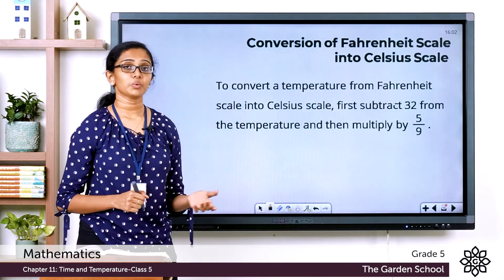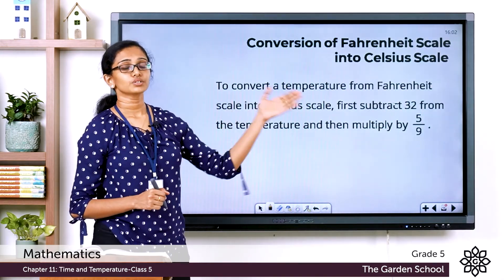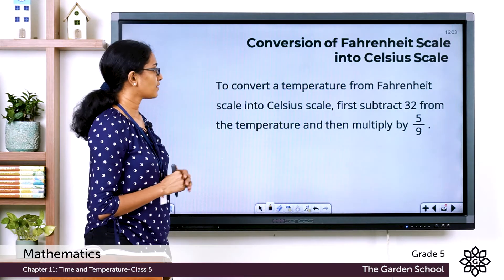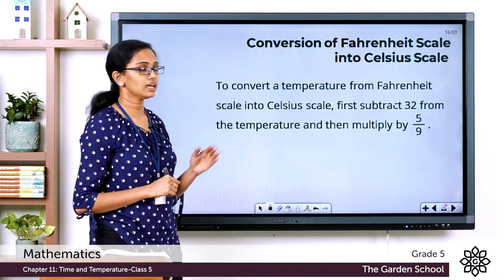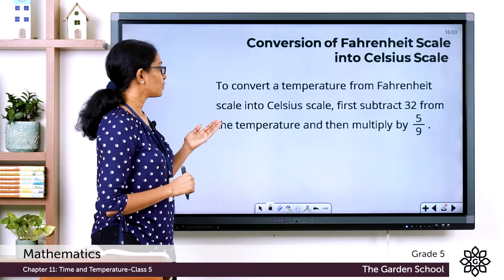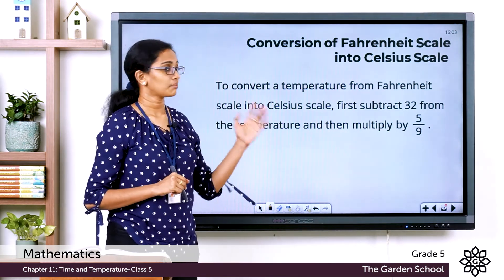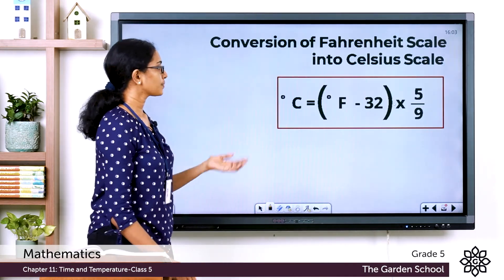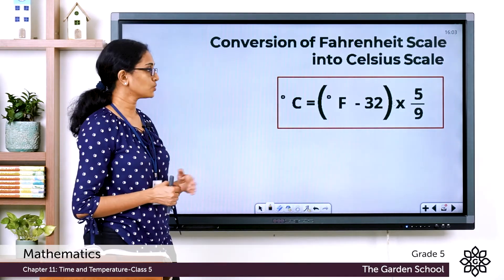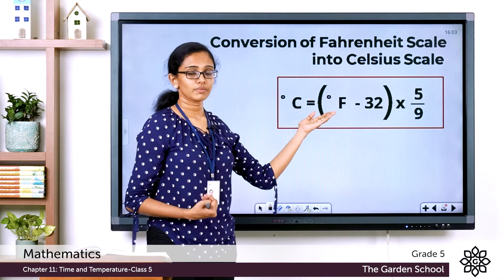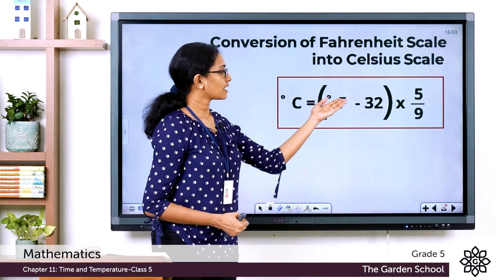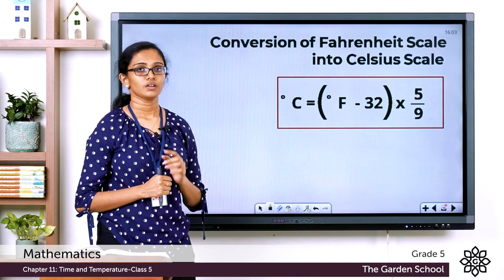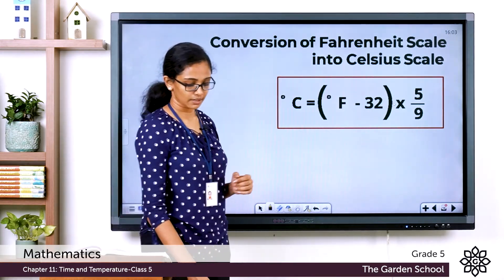Now let us see how we can convert from Fahrenheit scale to Celsius scale. To convert a temperature from Fahrenheit scale into Celsius scale, first subtract 32 from the temperature and then multiply by 5 by 9. By formula it is: degree Celsius is equal to the given temperature in degree Fahrenheit minus 32, into 5 by 9. Let us make this more clear with an example.